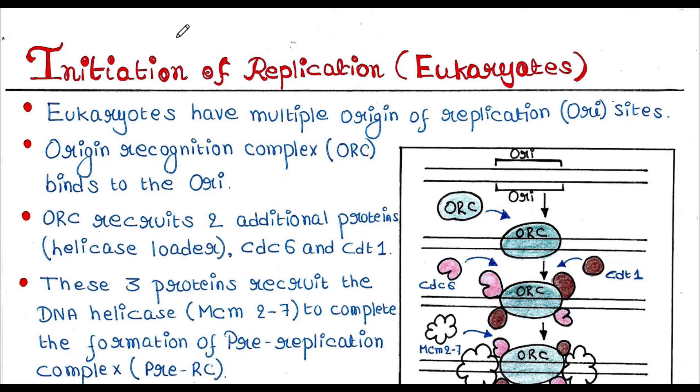So in our last lecture, we discussed prokaryotic replication. Today we will focus on eukaryotic replication. Eukaryotic replication has three major steps just like prokaryotes: initiation, elongation and termination. Today we will specifically focus on the initiation part.